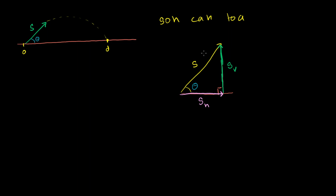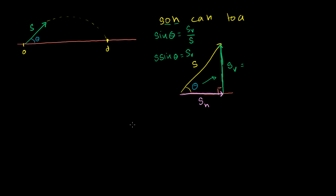So what's the vertical component going to be? The vertical component is opposite this theta, and we know the hypotenuse is s, so we use sine, because that deals with the opposite and the hypotenuse. Sine of theta equals the magnitude of our vertical velocity over the hypotenuse s. If we want to solve for the vertical component of our velocity, we multiply both sides by s. So s·sine(θ) equals the vertical component of our velocity.